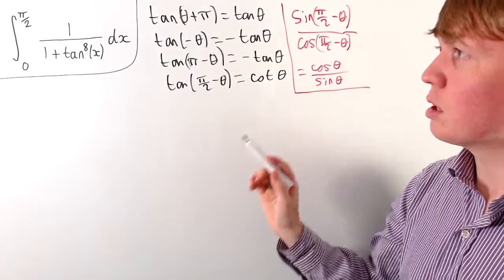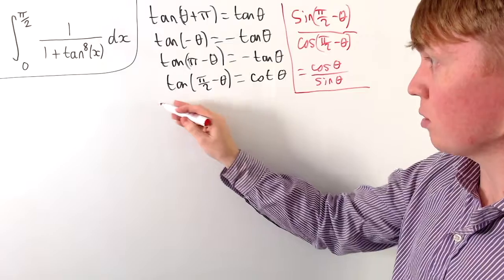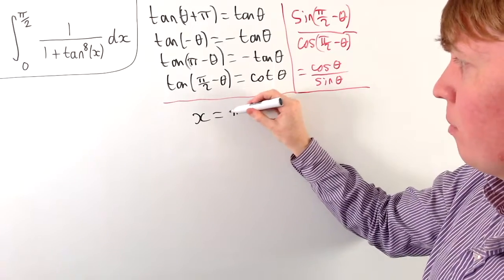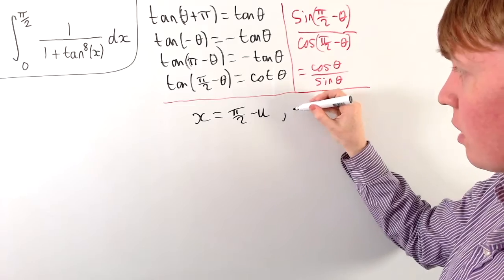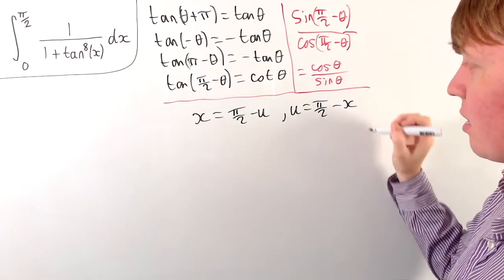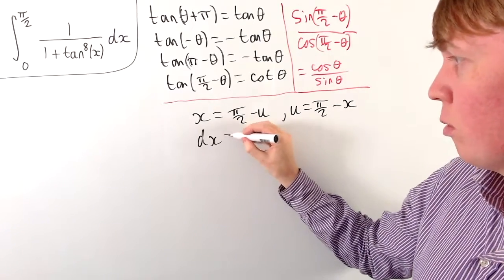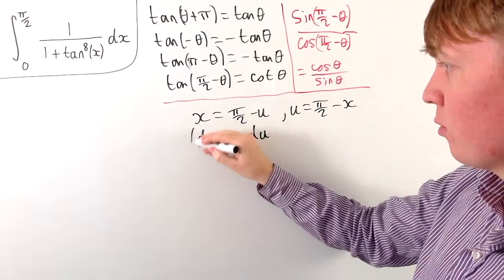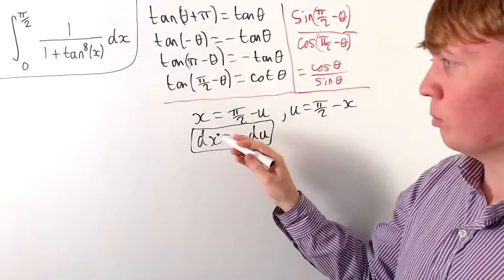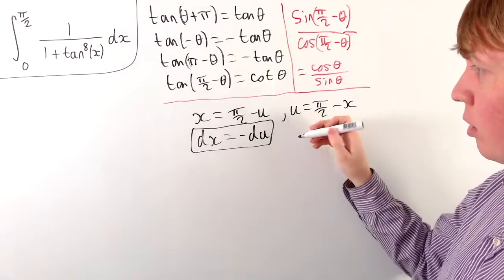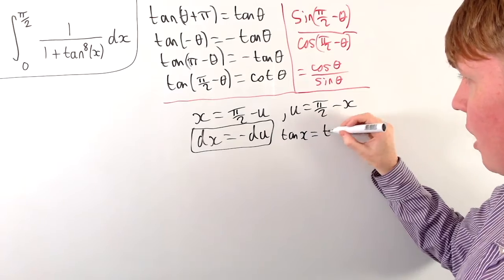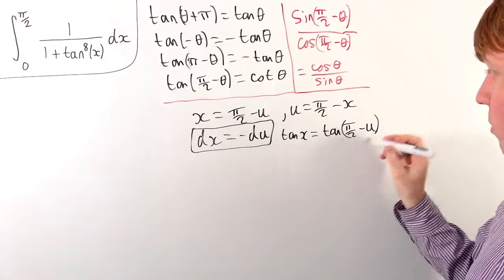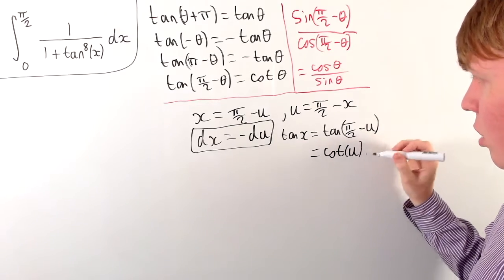We can use this identity with the substitution: replace x by π/2 − u, or equivalently u = π/2 − x. This gives dx = −du. And tan(x) becomes tan(π/2 − u), which by our identity equals cot(u). So tan(x) is equivalent to cot(u).